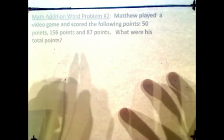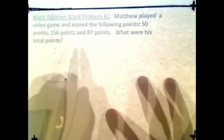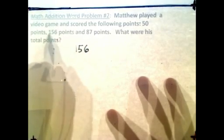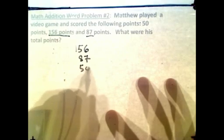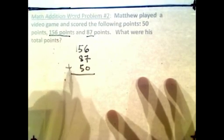There's three sets of points that he scored, so we have to add them together. For the purpose of setting it up, I would probably write the biggest number first, so that's 156 points, followed by 87. I find it easier if I go from largest to smallest. You don't have to do this, it's just for me.